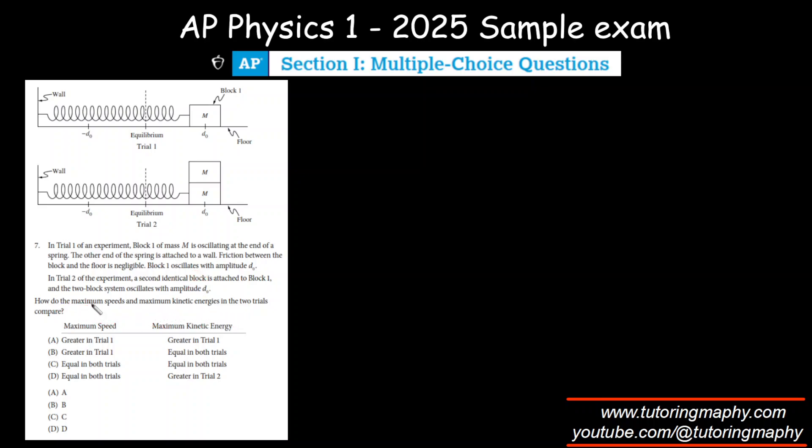Alright, we know that V max is given by A omega, right? That's the formula for the horizontal mass-spring system. You don't have to worry about A because the amplitude is just D not in both cases, so V max is given by D not omega.